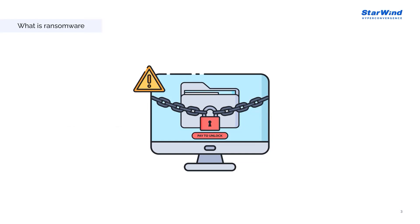So let's start with what ransomware is, basically. It's malware designed to deny a user or organization access to files on their computer by encrypting those files and demanding a ransom payment for the decryption key. Cyber attackers place organizations in a position where paying the ransom is the easiest and cheapest way to regain access to their files. Ransomware has quickly become the most visible type of malware. Recent attacks have impacted hospitals' ability to provide crucial services, crippled public services in cities, and caused significant damage to various organizations.